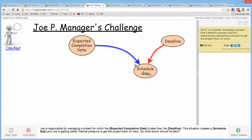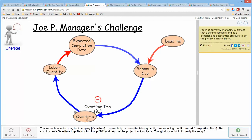And then I ask, what does the schedule gap end up influencing? Well, there's an option for working overtime. And working overtime increases the labor quantity, which should reduce the expected completion time. And if I walk this loop, there's one opposite relationship in it, so it's a balancing loop.